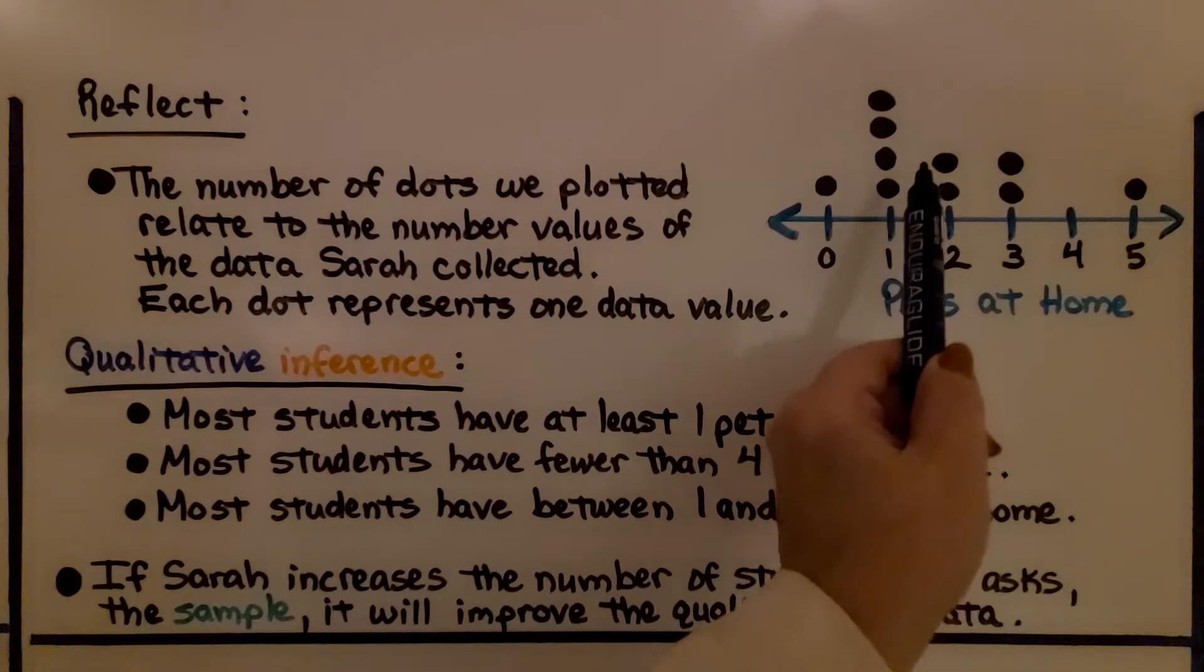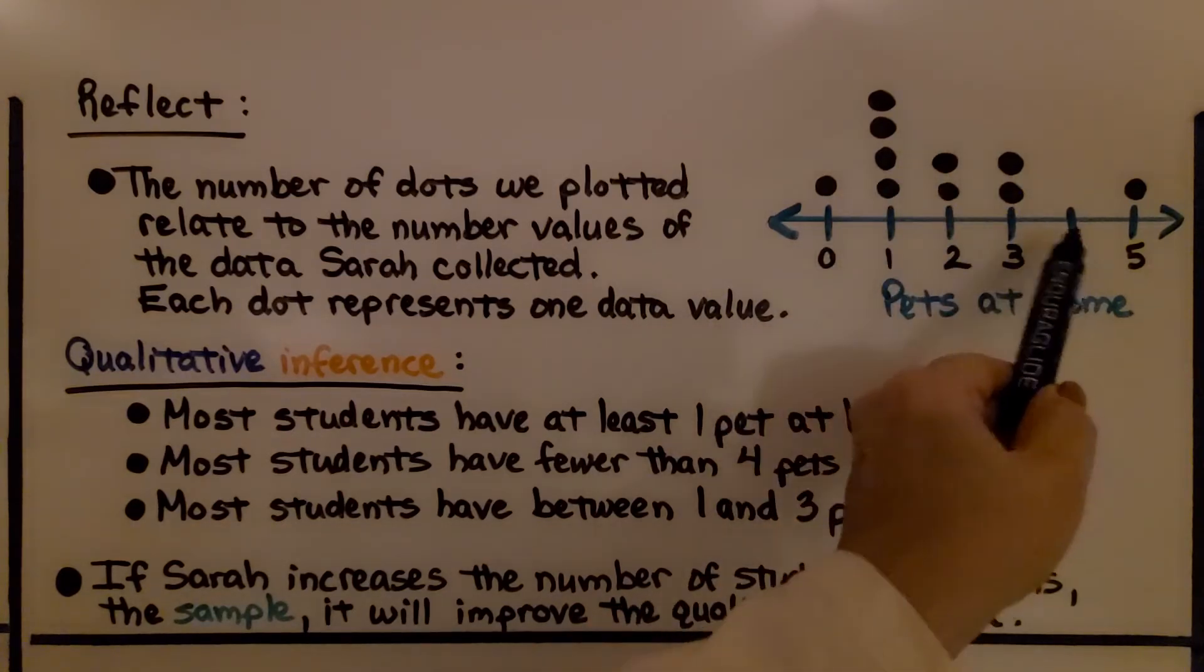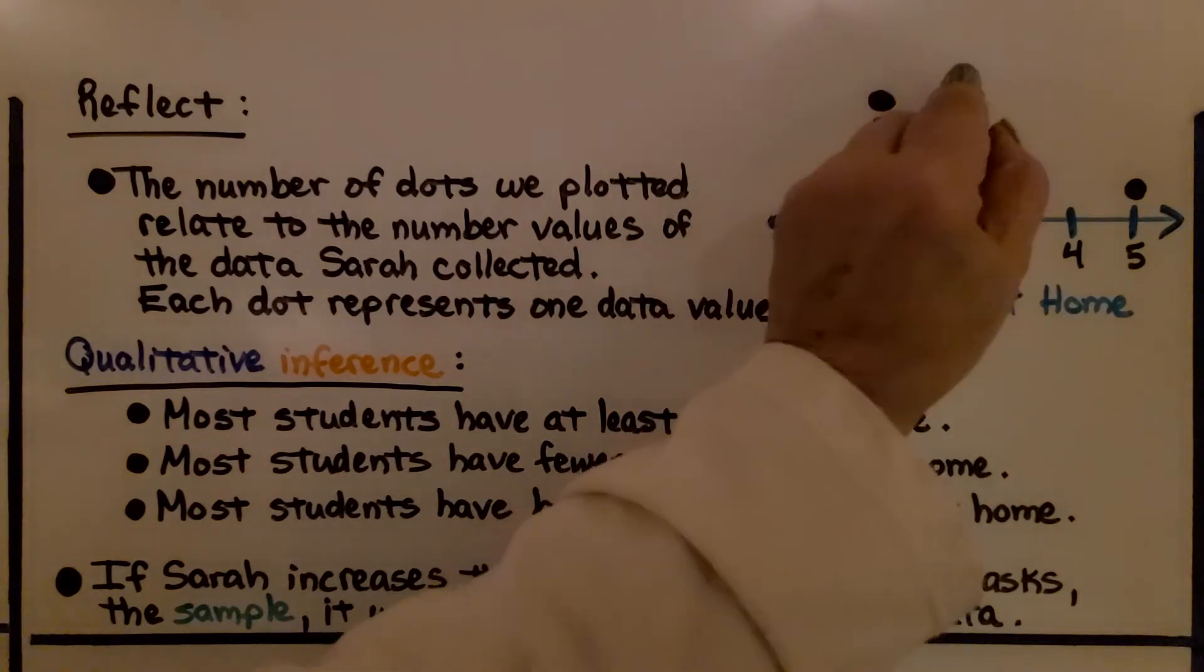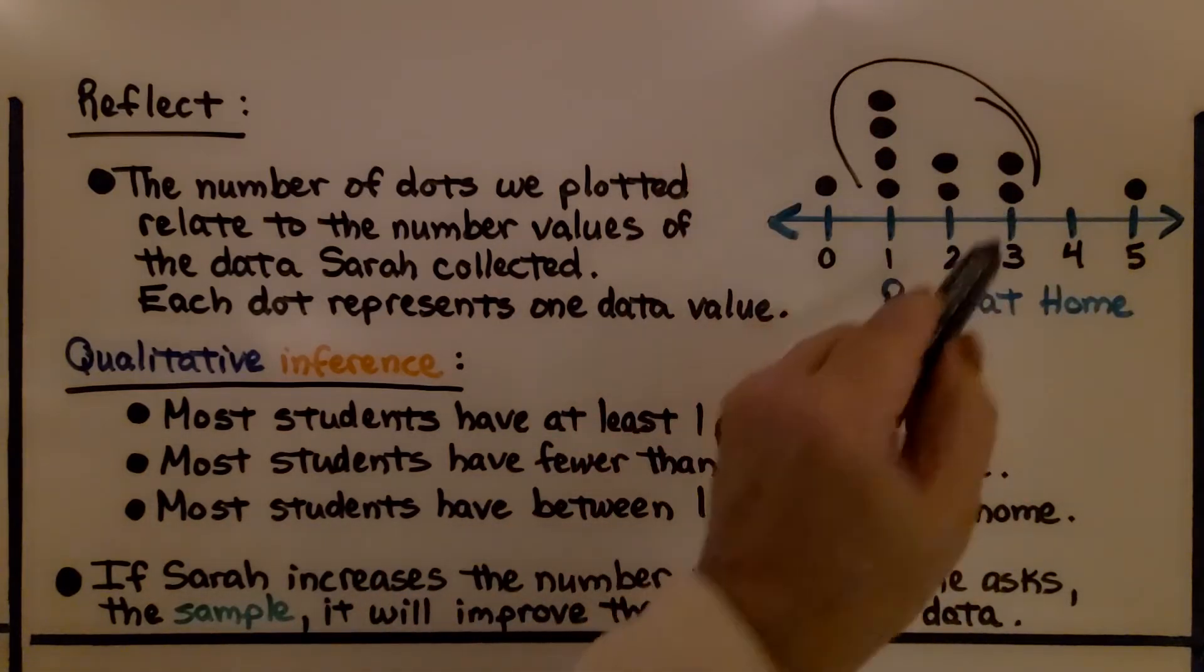If you look at our dot plot, most of the students answered in this area, which is less than four. Most students have between one and three pets at home. This area right here is most of the answers, so it's in between one and three.